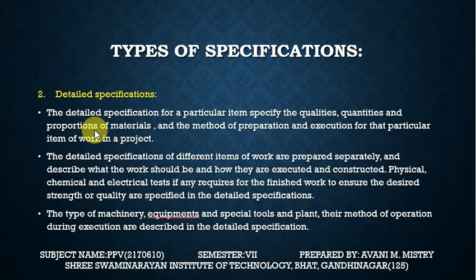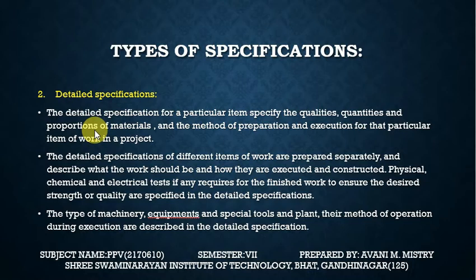Brief specification does not form part of the contract document. Then the next one is detailed specification. In detailed specification, everything is given — how the work should be done, what the qualities should be, quantities of the item to use, proportion of the material, method of preparation — all of this is written inside.